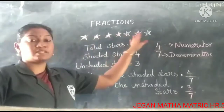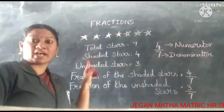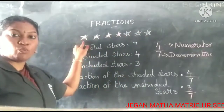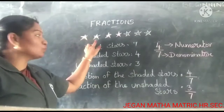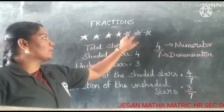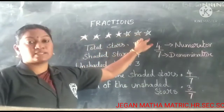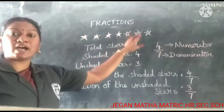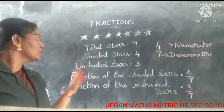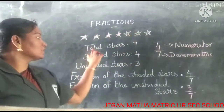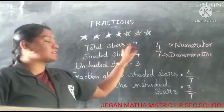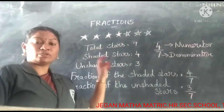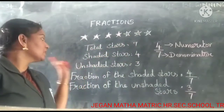There are 7 stars here. Let's count them: 1, 2, 3, 4, 5, 6, 7. The total stars are 7.